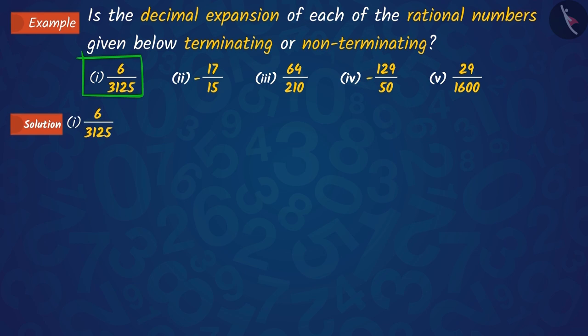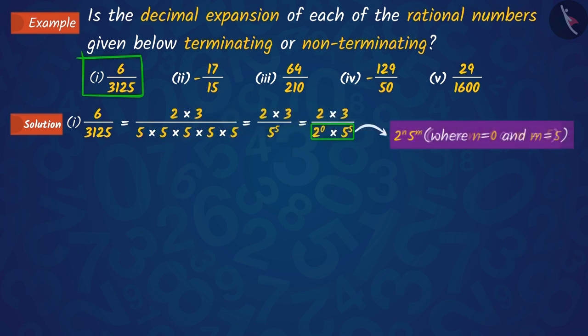If we factorize both the numerator and denominator of this first rational number, we find that the denominator is in the form of 2 raised to n into 5 raised to m.